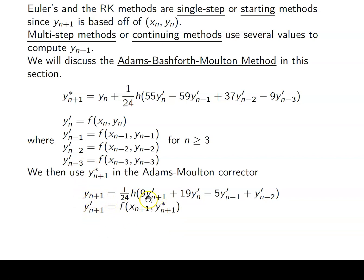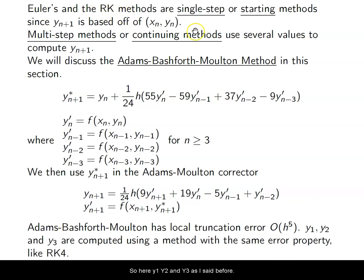So the Adams-Bashforth-Moulton has a local truncation error of O(h^5), which means it has a global truncation error of O(h^4), the same as our Runge-Kutta method, our RK4 method. So here, Y1, Y2, and Y3, as I said before, our starting values are computed using a method with the same error property, like RK4. So I would use RK4 to find Y1, Y2, Y3, and then I would start this off.